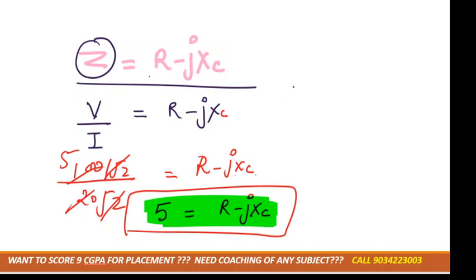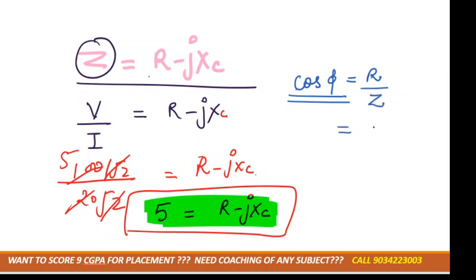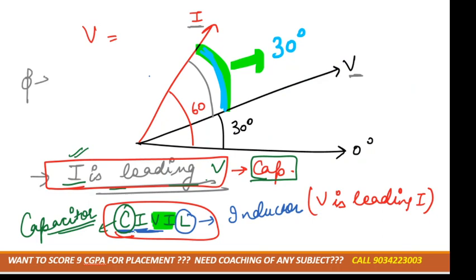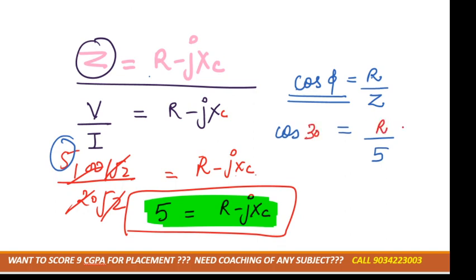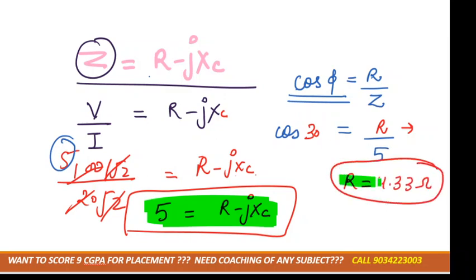The power factor formula is cos φ = R/Z. Z = 5, and φ is the angle between voltage and current, which is 30°. So cos 30° = R/5. Solving this, R = 5 × cos 30° = 4.33 ohms.